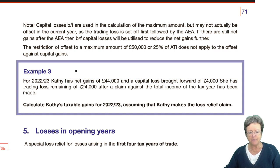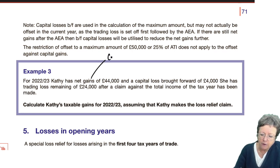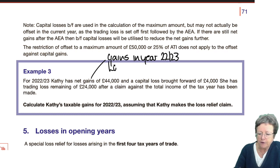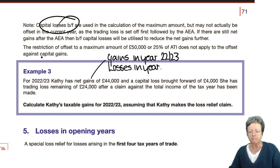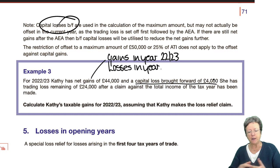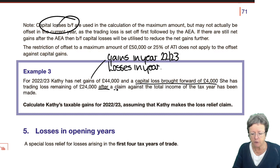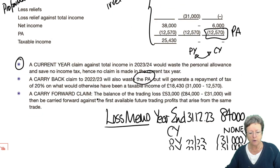In example three, Cathy has net gains of £44,000 for 2022-23 — that is, her gains in the year less any losses in the year. She also has a capital loss brought forward. Those brought-forward losses are used in the maximum amount calculation but may not actually be set off against gains in that year — though you need to put them into the calculation. She has trading losses remaining of £24,000 after the required claim against total income in the tax year has already been made.